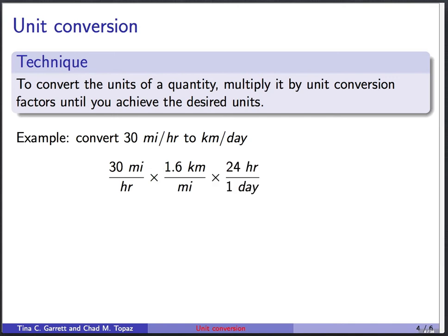We'll multiply by another unit conversion factor that you know off the top of your head. This is 24 hours per day. So now we have hours canceling, we have miles canceling. And what we're left with is 30 times 1.6 times 24 kilometers per day. And that turns out to equal 1,152 kilometers per day.